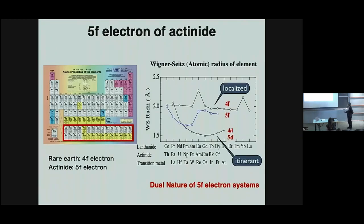You can see the periodic table — actinoids are here. This is the so-called Wigner-Seitz radius of elements. With increasing number of f-electrons or d-electrons you can see the atomic radius. For the 4f-electron system, it decreases — typical behavior for a localized system. For d-electron systems, it drops rapidly — typical itinerant behavior. For the 5f-electron system, it first decreases, then increases again from plutonium or americium. This indicates the dual nature of 5f-electron systems: localized or itinerant. That's why actinoids are a very interesting system.